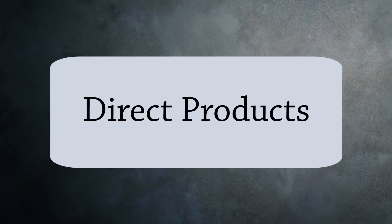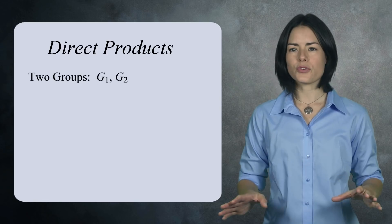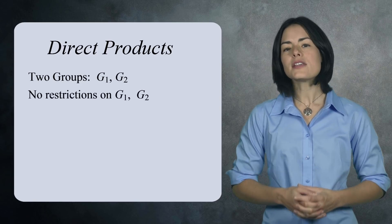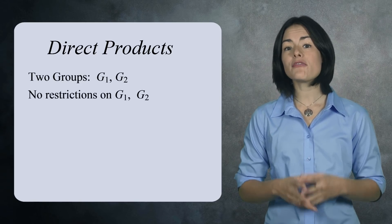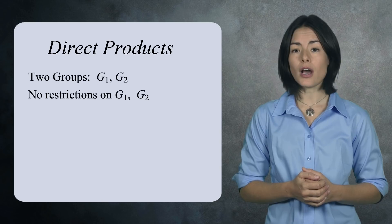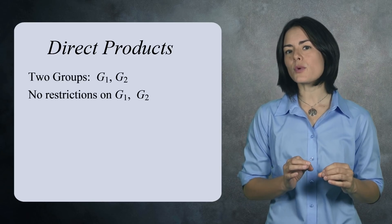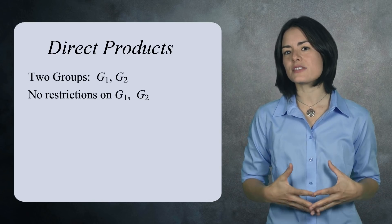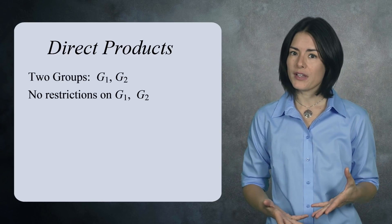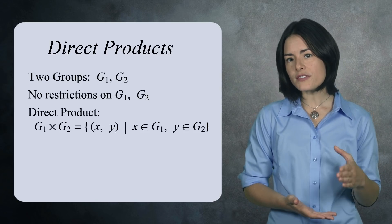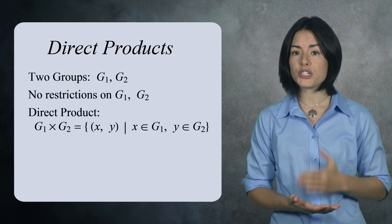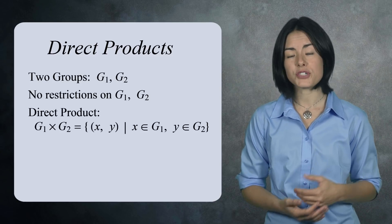One way is the direct product. Suppose you have any two groups, G1 and G2. These two groups can be finite or infinite, abelian or non-abelian. The direct product is a way to combine these two groups into a new, larger group. It's the set of all pairs where the first component is from G1 and the second component is from G2.